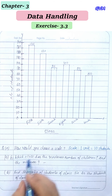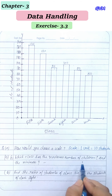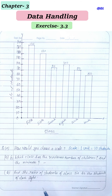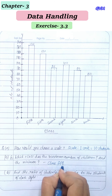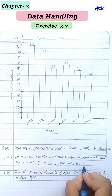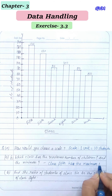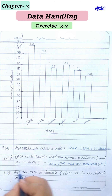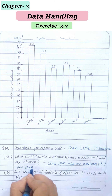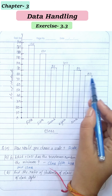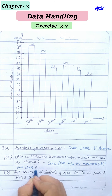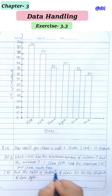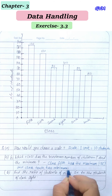Part (a) asks how we chose the scale — our scale is one unit equals 10 students. Part (b) asks which class has the maximum and minimum number of students. Class 5 has the maximum with 135 students, and Class 10 has the minimum with 80 students.